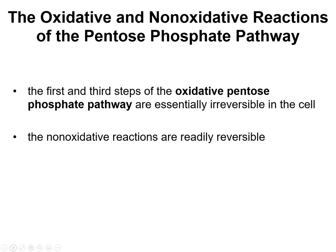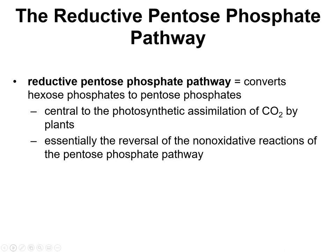As far as irreversible steps, the first step and the third step of the oxidative portion are essentially irreversible. The non-oxidative reactions are readily reversible. There's also the reductive pentose phosphate pathway, which converts hexose phosphates to pentose phosphates — this is actually key for plants, but we're not going to really talk about it; this is just for your knowledge.